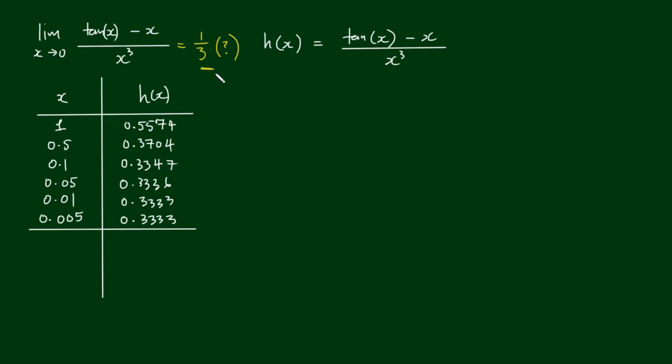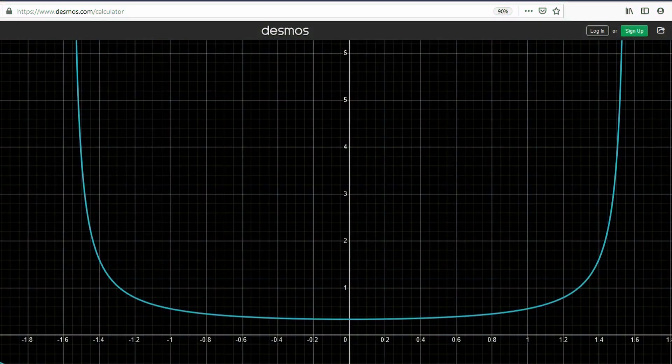All right, so this is our guess. Let's have a look at the graph of tan of x minus x divided by x cubed. Okay, so this is a graph that I have generated with Desmos Graphing Calculator. This is a great tool that you can access online at this address, and you can program any function and visualize it.